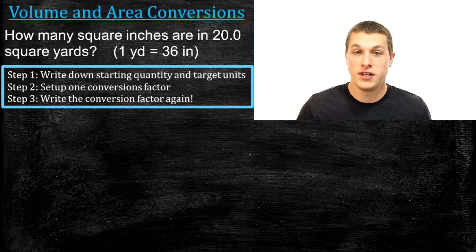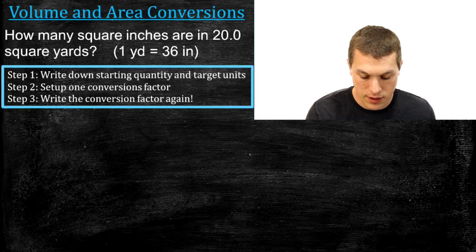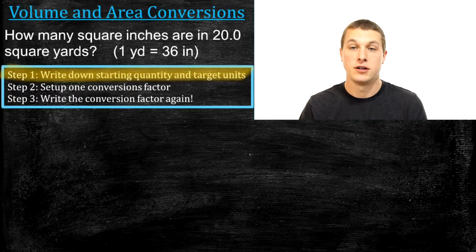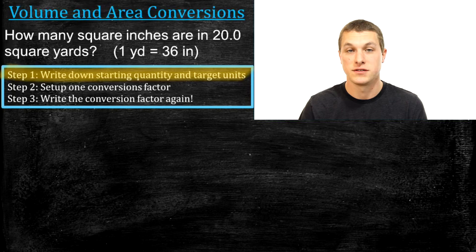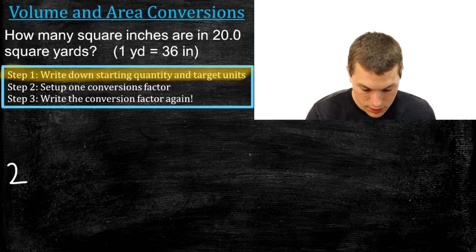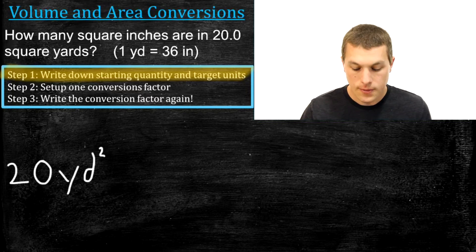This is a good time to pause the video, give this problem a try, then play it again to see if you got it right. Step one, just as before, is to write down your starting quantity and target units. The problem reads: how many square inches are in 20 square yards? You might be buying fabric — 20 square yards of fabric — and you want to know if you have enough to cover something measured in square inches.